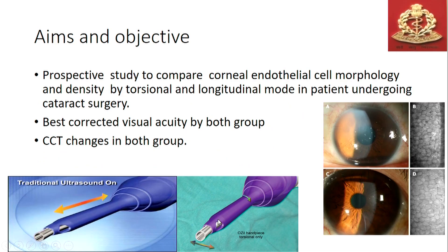Our study is a prospective study which compared the corneal endothelial cell morphology and density changes by torsional and longitudinal mode in patients undergoing cataract surgery. We have also compared the BCVA and the central corneal thickness for both groups.